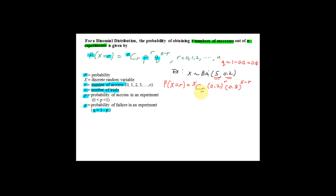To find P(X = 0), substitute r = 0 into the formula. So you have 5C0 × (0.2)^0 × (0.8)^(5−0). Press your calculator and you should get the answer 0.32768. This is the probability that x equals 0.